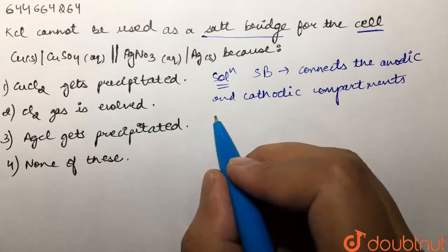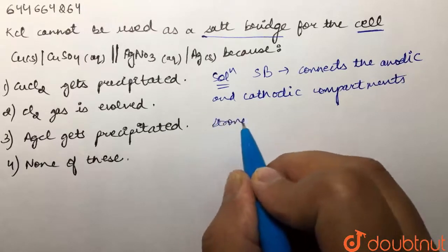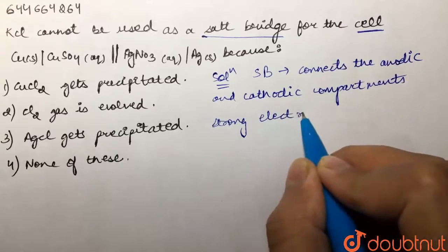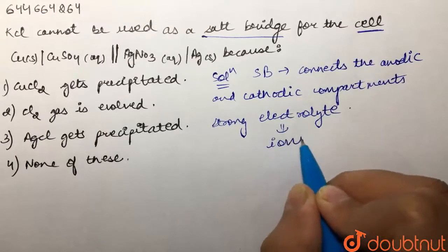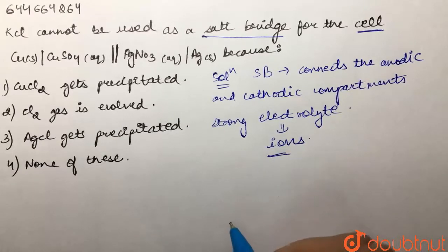So salt bridge consists of strong electrolyte, which is further made up of ions. These ions help to maintain the electrical neutrality.